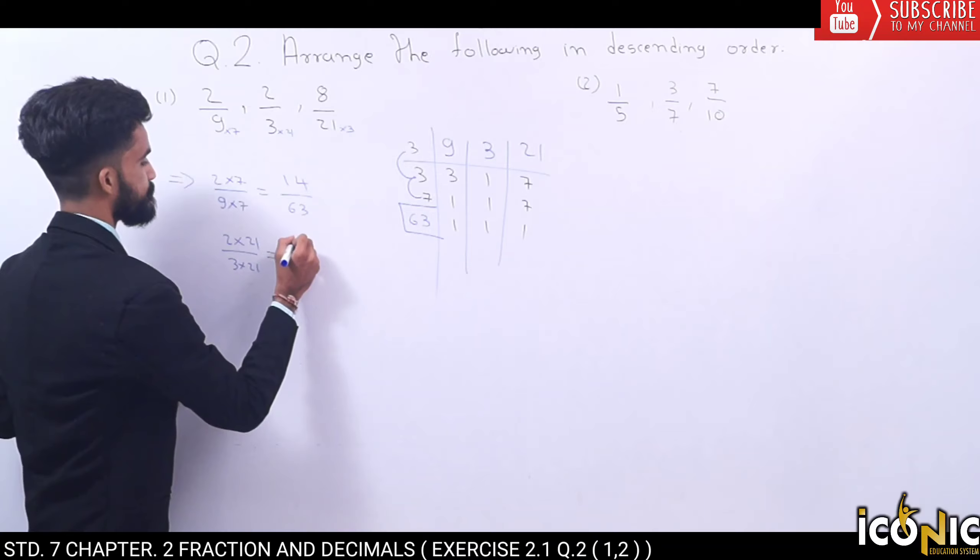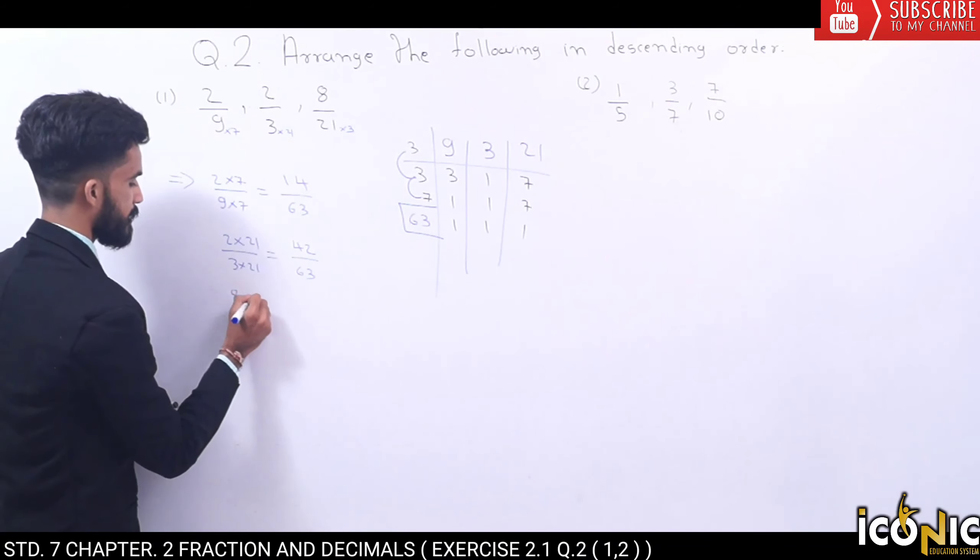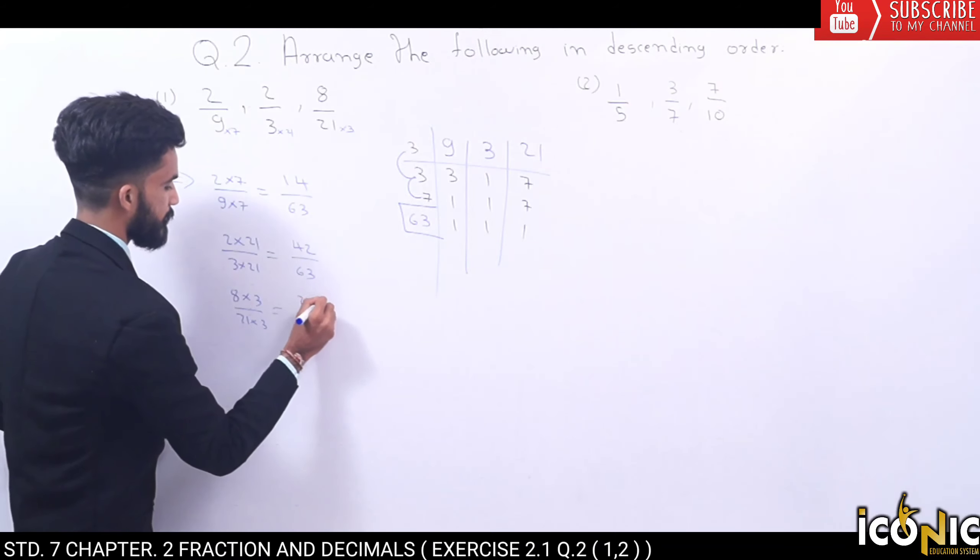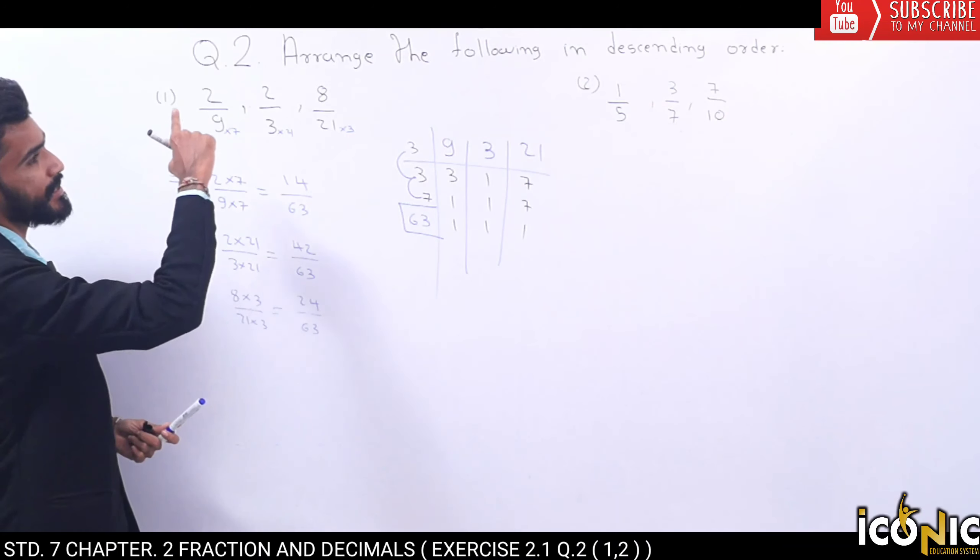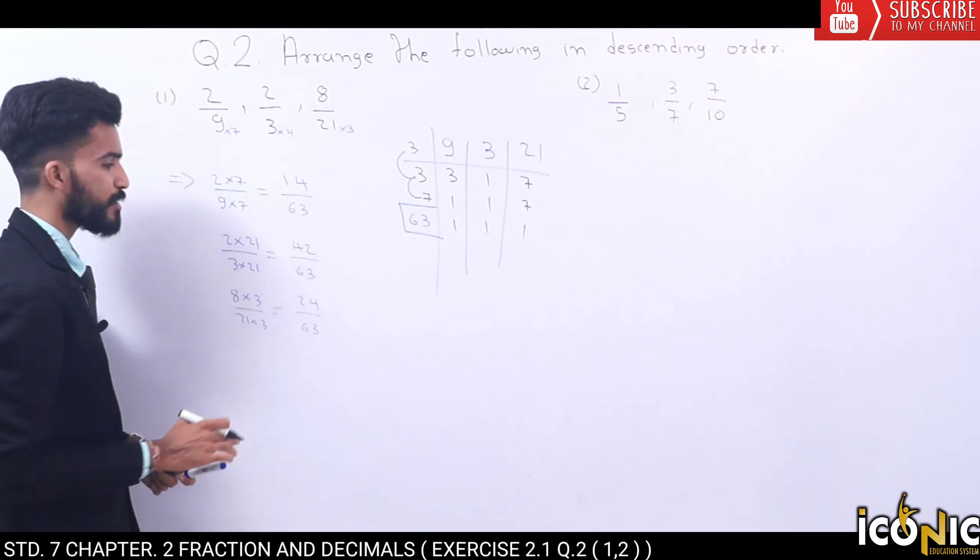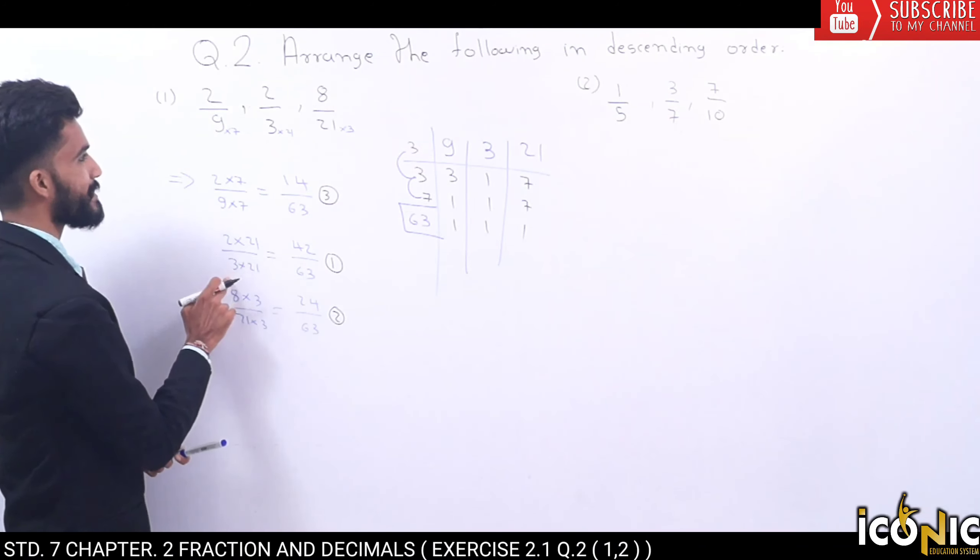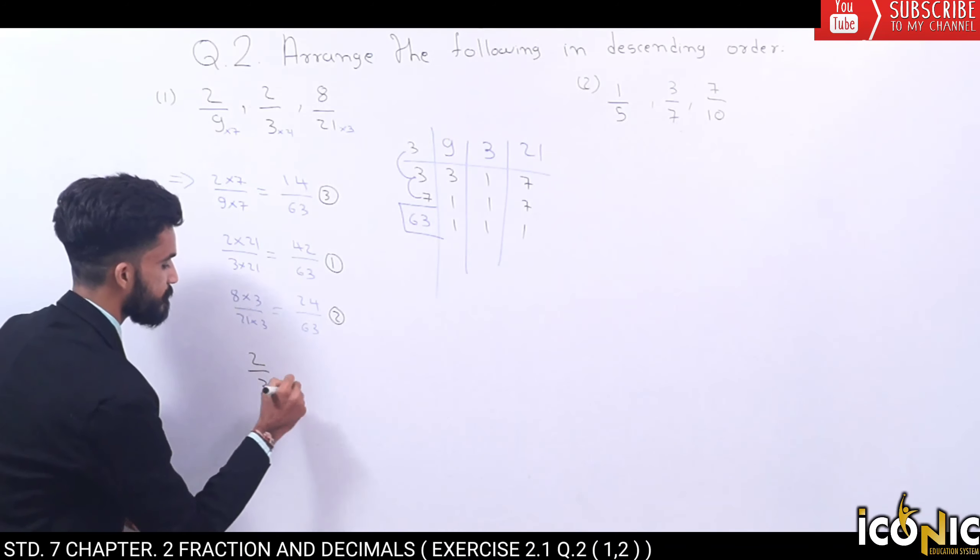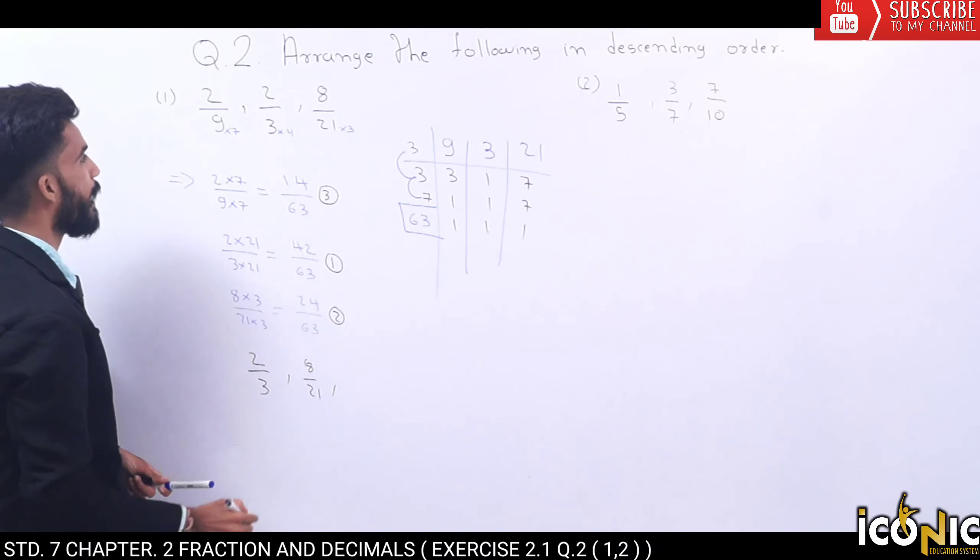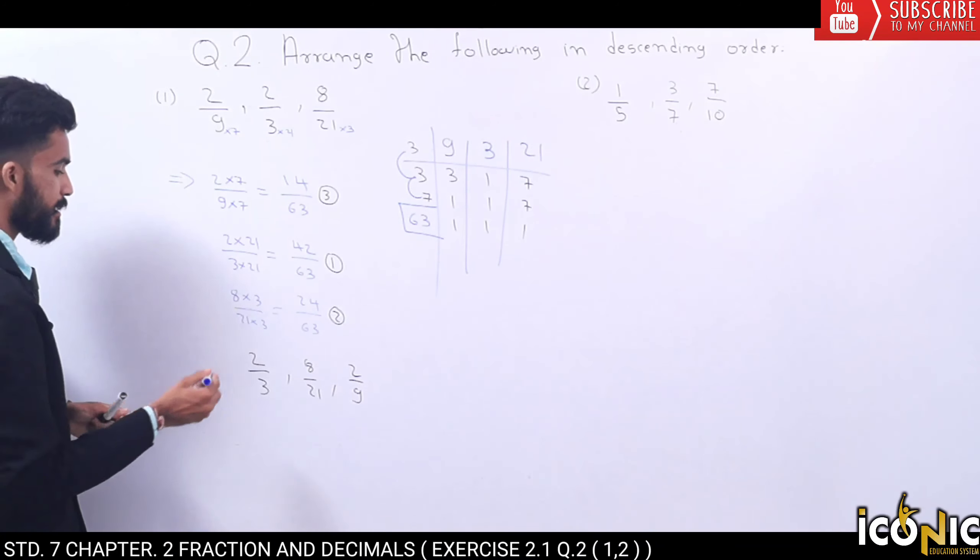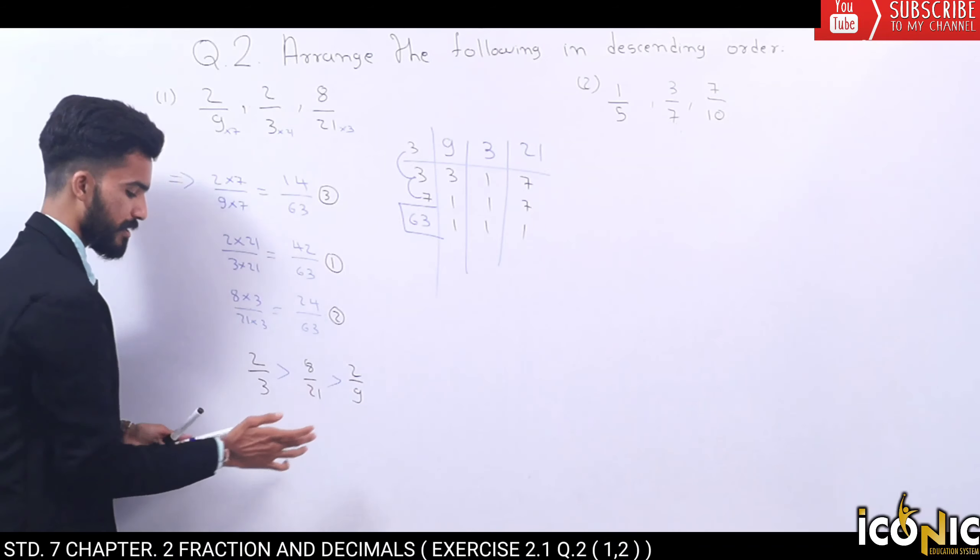8 by 3 is 24 divided by 63. The smallest number is 14 by 63. We have descending order, so 42 by 63 is the first number, 24 by 63 is second, and 14 by 63 is third. So, 2 by 3 is first, second one is 8 by 21, and third one is 2 by 9. 2 by 3 is greater than 8 by 21 is greater than 2 by 9. This is our final answer.